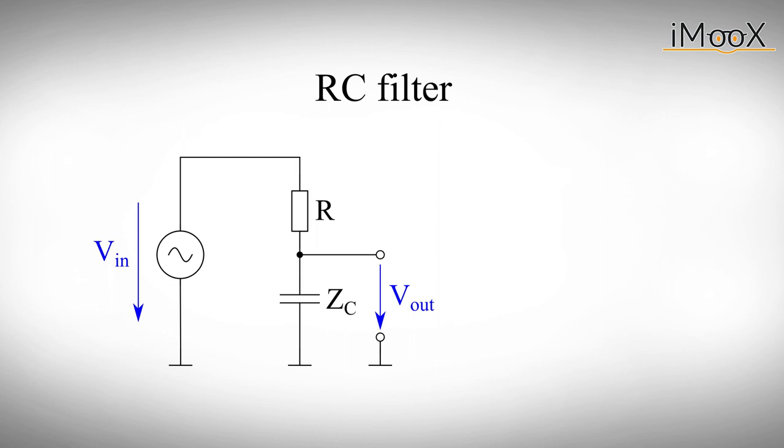In the next step, we can make this circuit frequency dependent by simply exchanging one of the resistors with a capacitor. That's because the capacitor has a very interesting characteristic. Its impedance will change with frequency.